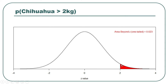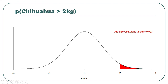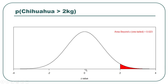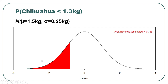Here's the diagram for the probability of a chihuahua weighing more than 2 kilograms. Those are the z-values in that distribution. Converting 2 kilograms to a z-score: with 0.25 kilograms as one standard deviation, from 1.5 up to 1.75 is one standard deviation, and up to 2.0 is two standard deviations — a z-score of 2. The area beyond z=2 is just over 2%. For less than 1.3 kilograms, the area beyond that z-score is 0.788, so the area below is 1 minus 0.788, about 21%.